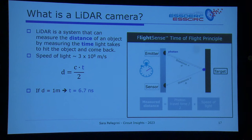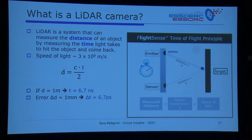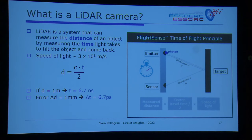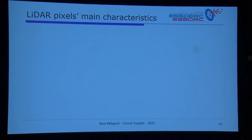We are dealing with very small times. One meter corresponds to a time of 6.7 nanoseconds — quite small. And if we want a small error of only one millimeter, we need a timing resolution of 7 picoseconds. So we call it a LiDAR camera and talk about pixels. The two main characteristics are: the ability to sense light — take in photons and give a signal output — and to measure the time of arrival of the pulses to determine distance.